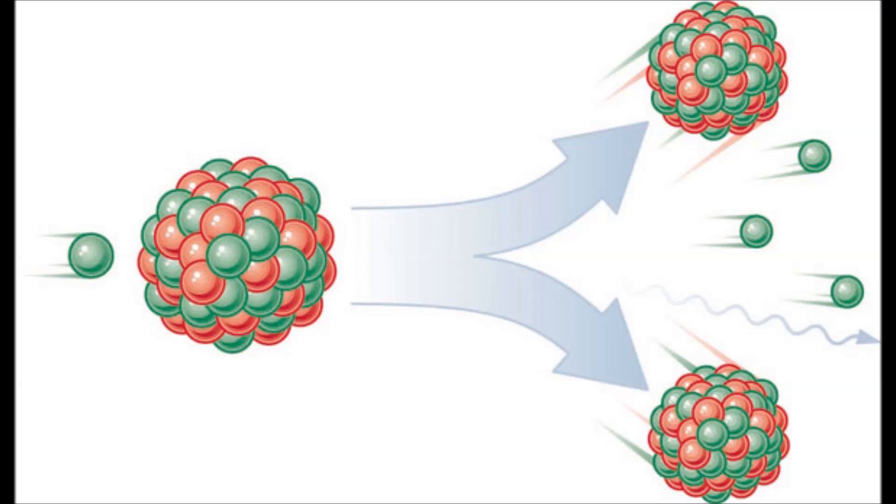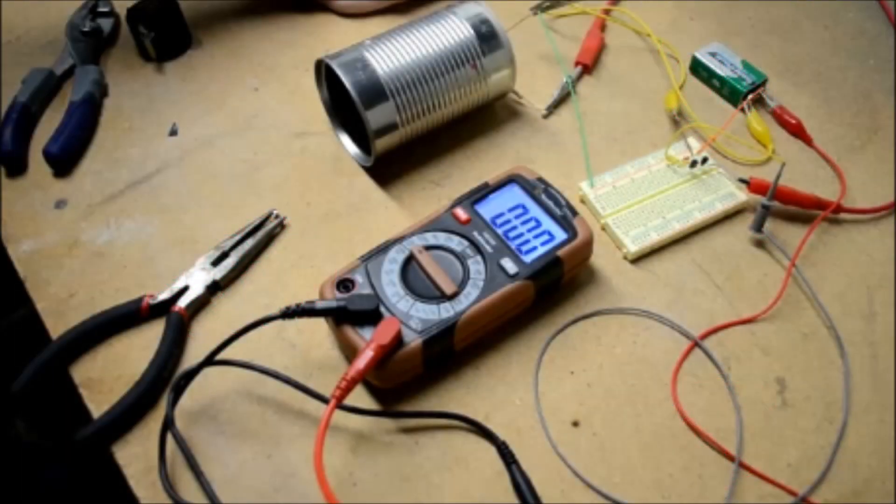He noticed that, if a neutron beam was directed at a sample of uranium or thorium, the nucleus would split apart into two large chunks. These fission fragments and gamma rays that are produced in a fission event would ionize the gas in the detector he used. The same principles can be applied to this chamber using such sources.